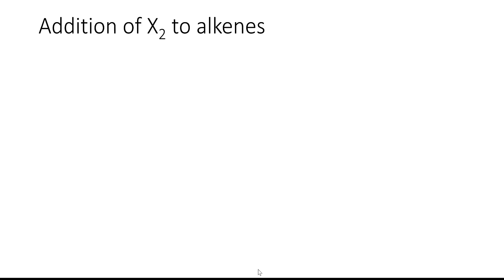Hi everybody! In this video we're going to continue talking about addition reactions with alkenes. Previously we've looked at the addition of hydrogen halide to an alkene as well as the hydration of alkenes. In this video we're going to focus on the addition of two halogens across an alkene as well as the formation of a halohydrin. Let's start by looking at an example of halogen addition to alkenes.